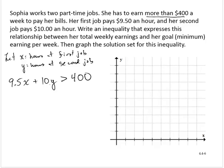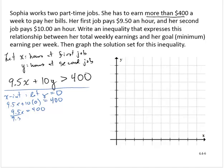So then, let's find the x-intercept by letting y equal 0. If I let y equal 0, then I would have 9.5x plus 10 times 0. We'll think equals 400 for the moment. So that would give me 9.5x equals 400. And dividing through by 9.5, 400 divided by 9.5 is about 42.1.